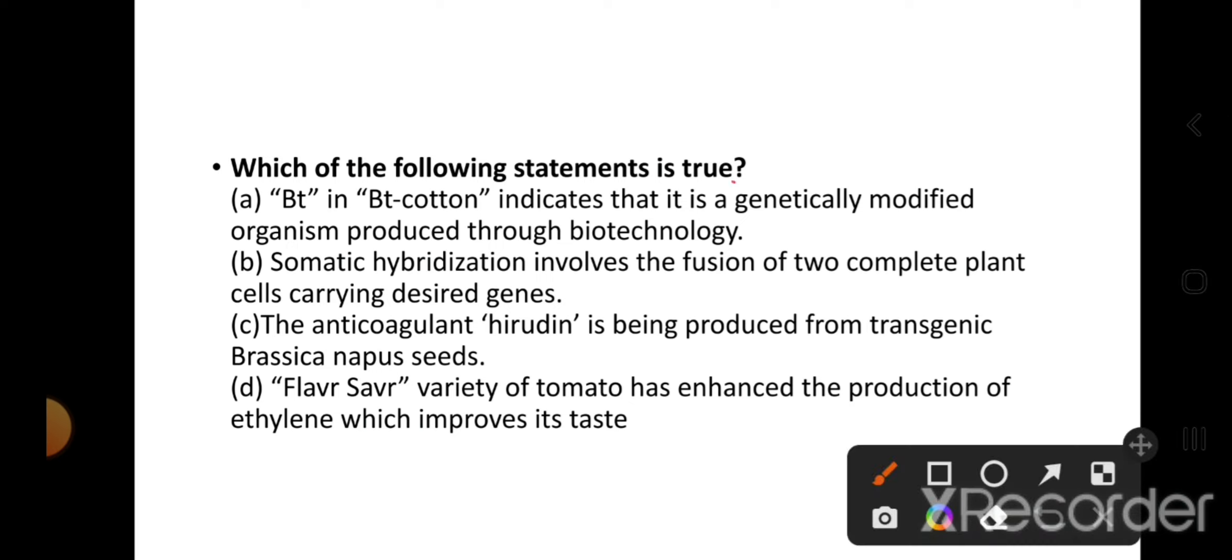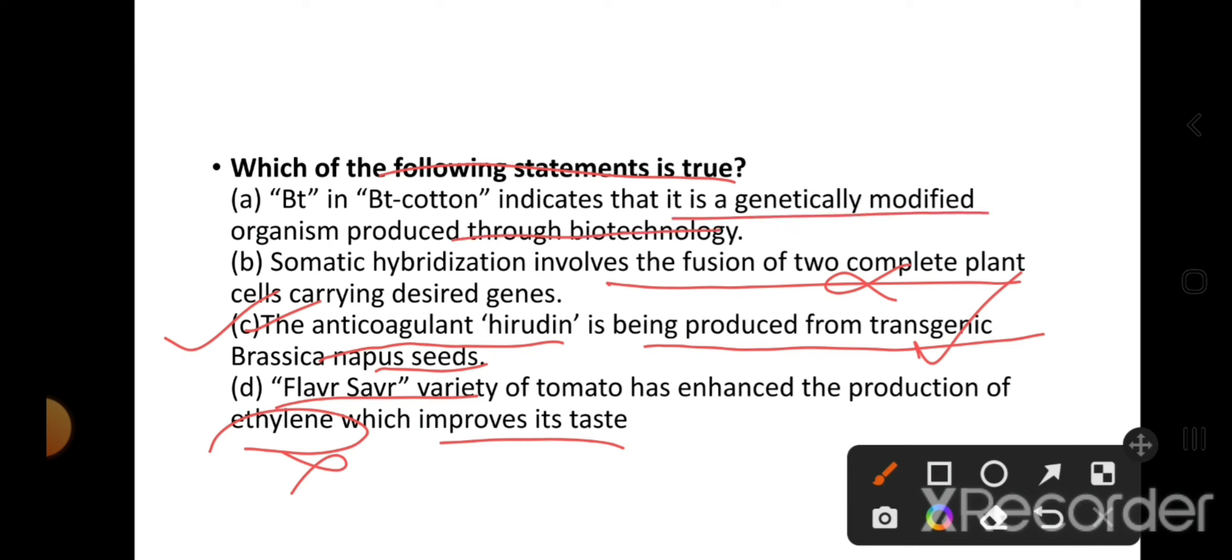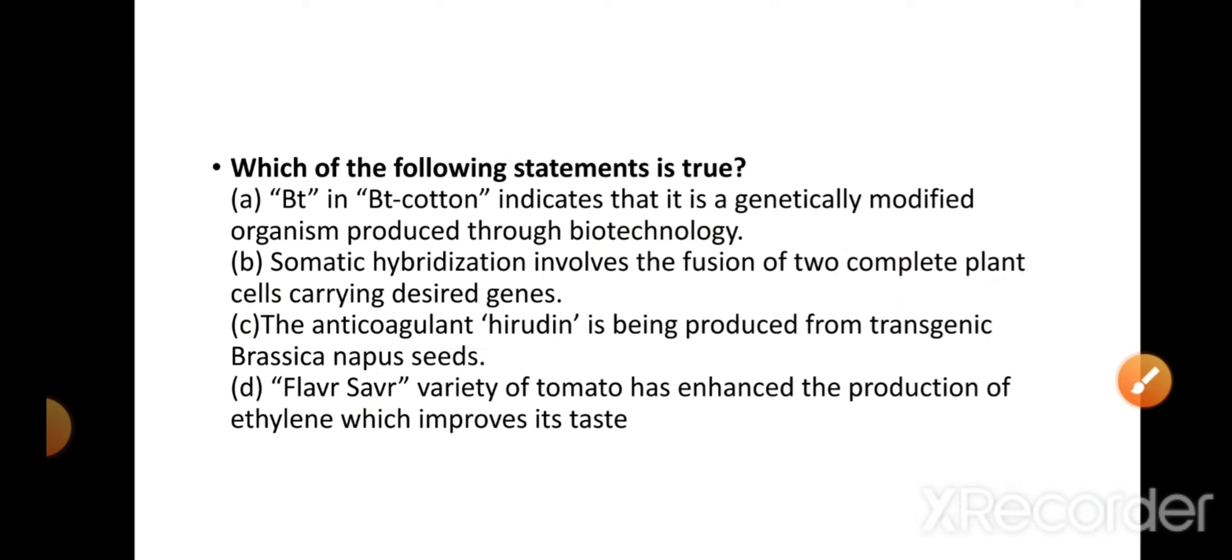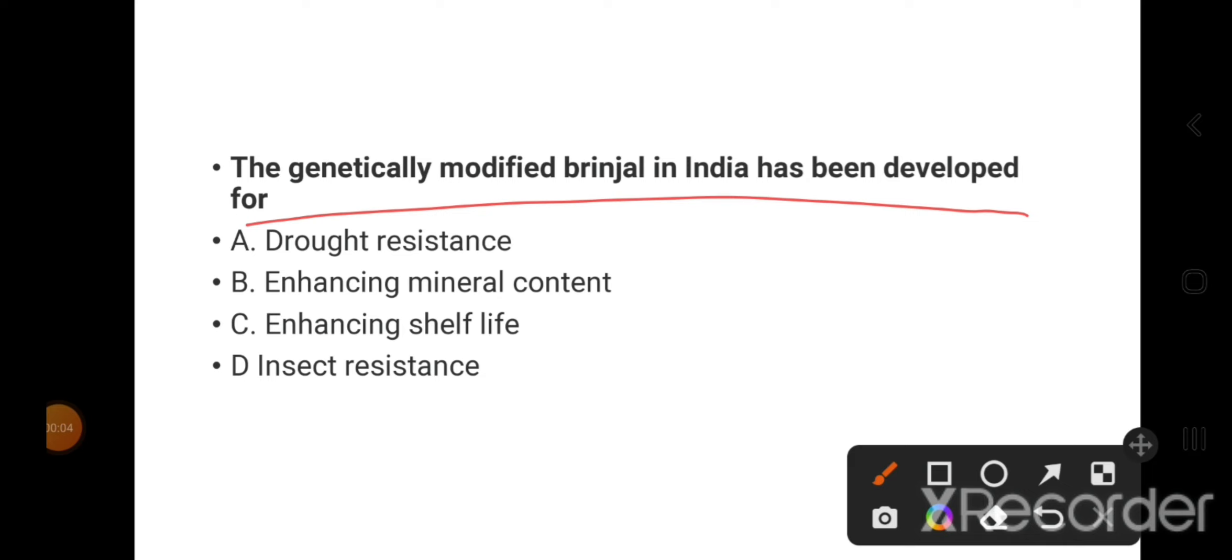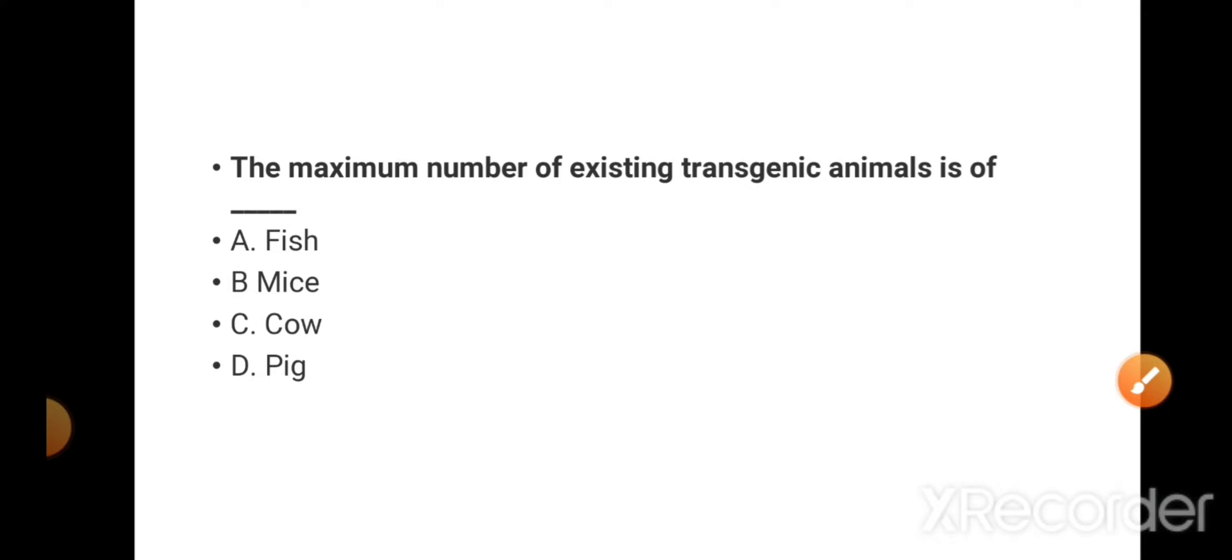Which of the following statements is true? Flavr Savr variety of tomato has enhanced production of ethylene which improves its taste - this is wrong. Flavr Savr was developed to increase shelf life, not for ethylene. The anticoagulant hirudin is being produced from transgenic Brassica napus seeds - yes, it is correct. BT in BT cotton indicates it is a genetically modified organism produced through biotechnology - this is wrong. The genetically modified brinjal in India has been developed for insect resistance.